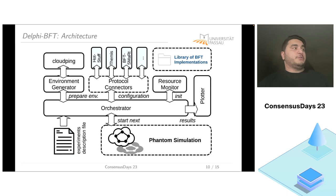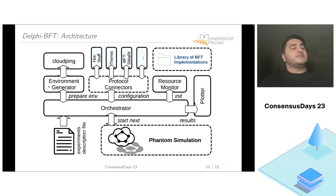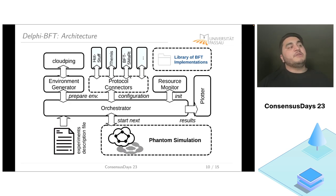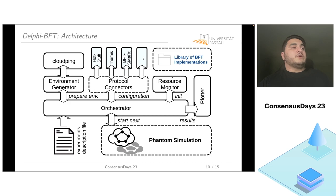The structure of Delphi BFT is relatively simple. At the center is the orchestrator, a manager entity for all other components. We have an environment generator responsible for generating the Phantom config and network specification. We have protocol connectors used to configure protocols and hook them into the simulator. Currently we support HotStuff, Themis (an implementation of PBFT), and BFT-Smart, but this can always be extended. We also have a resource monitor to track resource usage and a plotter to visualize results.